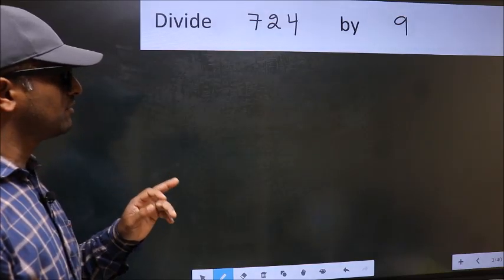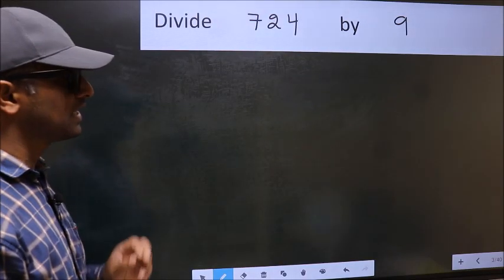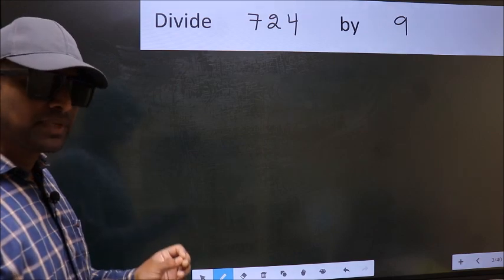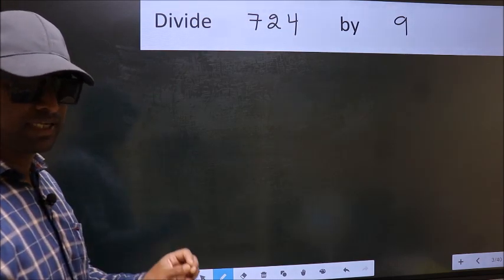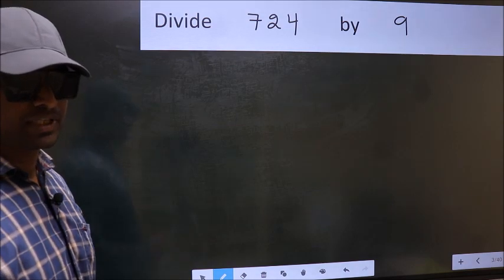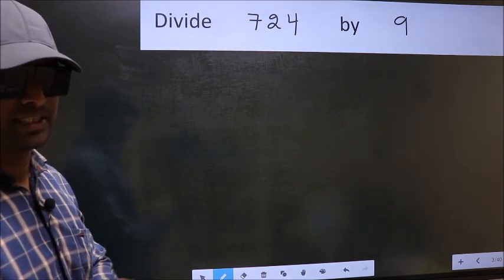Divide 724 by 9. While doing this division, many do this mistake. What is the mistake that they do? I will let you know. But before that, we should frame it in this way.